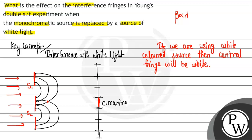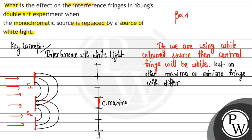But if we go up or down from the center, the position changes because the fringe width depends on the wavelength. So fringes with different colors will start to appear on either side of the central fringe.